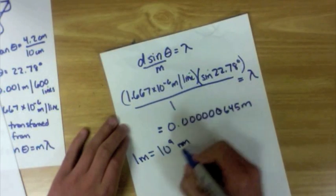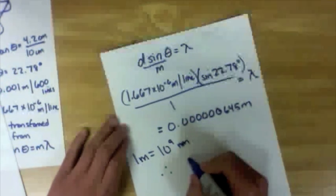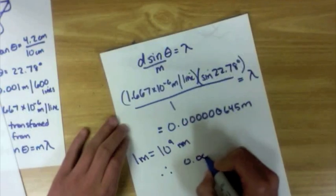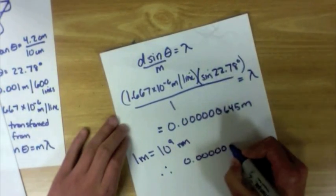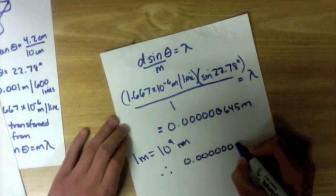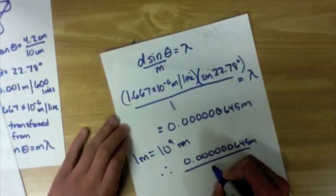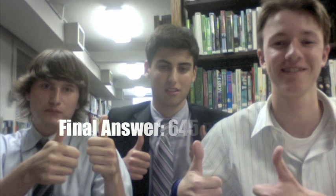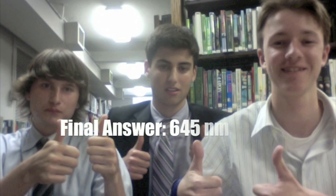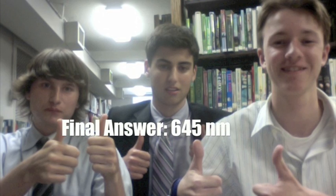We can then use this conversion to find the wavelength in nanometers. Our final result is 645 nanometers, which falls under the range of 640 to 750 nanometers for red light.